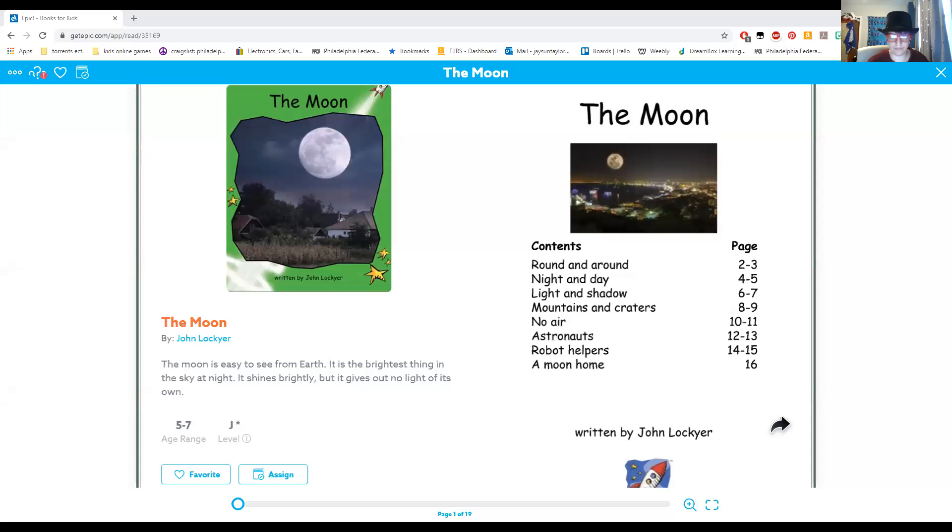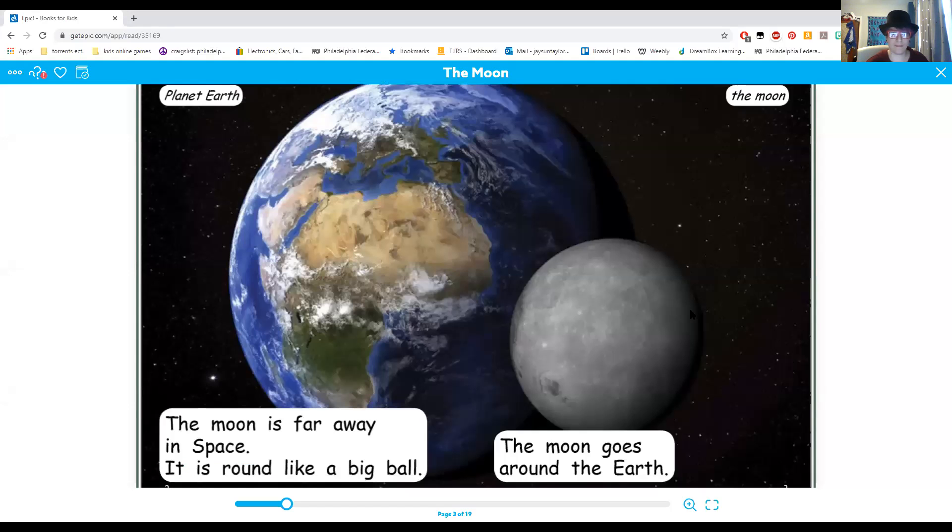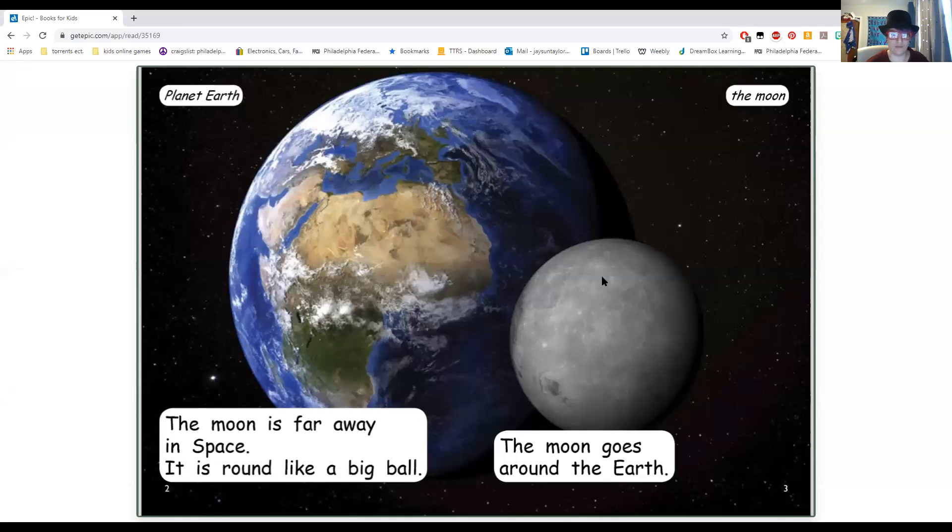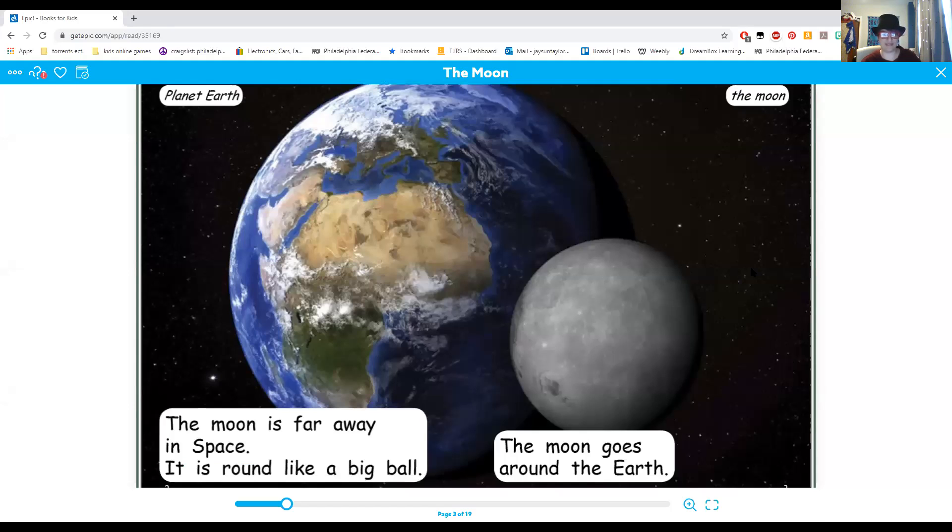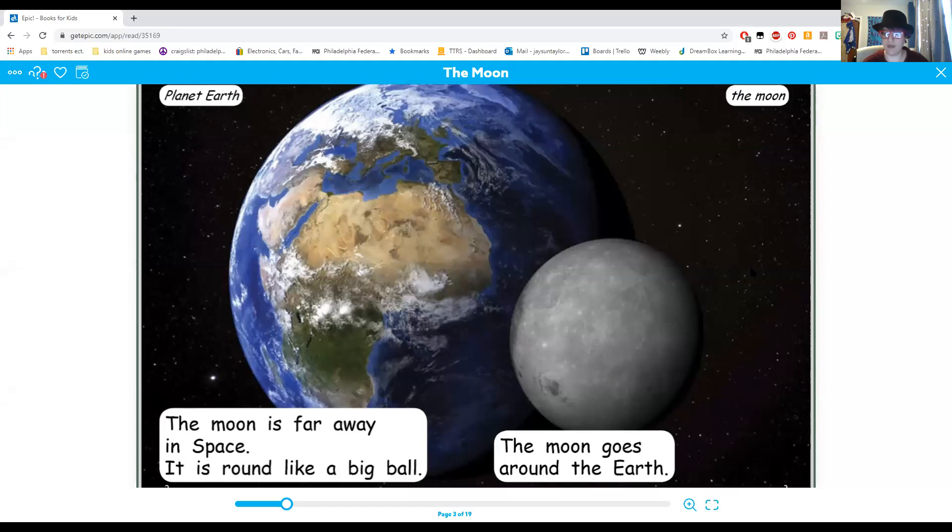The Moon. Here's planet Earth and here's the moon. The moon is far away in space. It is round like a big ball. The moon goes around the Earth.